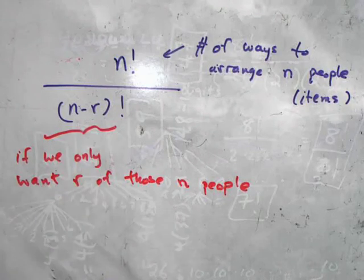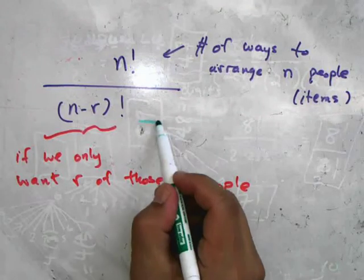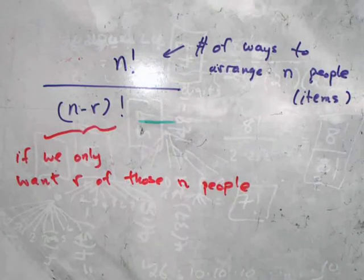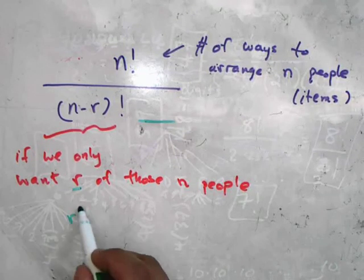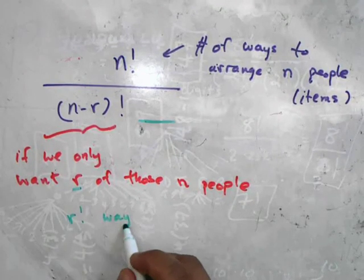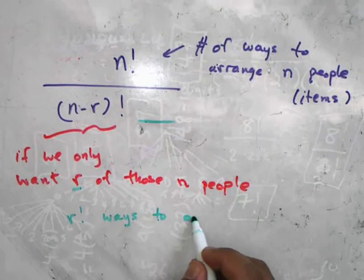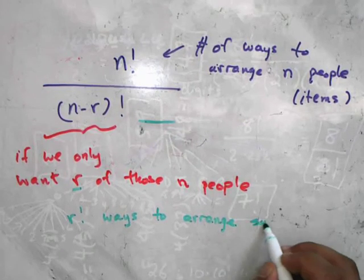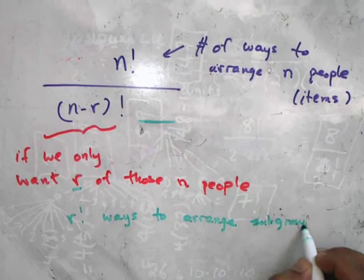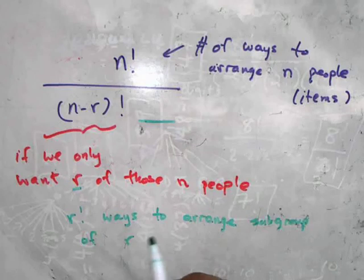And now we have this new thing where there's something else that we have to adjust here. Well, if you take these r people, there are r factorial ways to arrange the subgroup of r people. So looking at this example here, you're picking three, but there are three factorial ways...